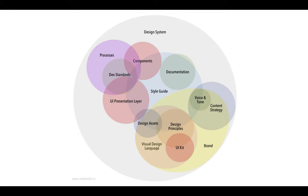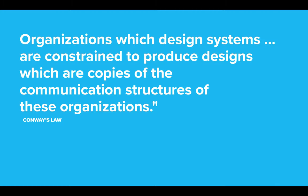And if you kind of squint your eyes and look at this just right, it kind of starts to resemble an org chart. Conway's Law states: organizations which design systems are constrained to produce designs which are copies of the communication structures of these organizations. It's a long-winded way of saying that products tend to resemble the communication of the teams that build those products.